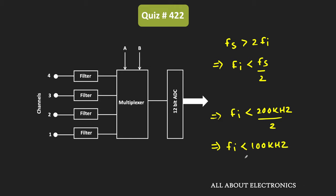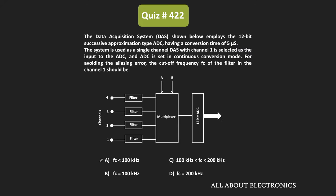If we satisfy this condition, we will not have any aliasing effect. When acquiring data from a channel, we do not have control over the input signal frequency. However, we can select the cutoff frequency of the filter such that aliasing is avoided. This means the cutoff frequency of the anti-aliasing filter should be less than 100 kHz. Therefore, for the given question, option A is the correct answer — the cutoff frequency of the filter should be less than 100 kHz.